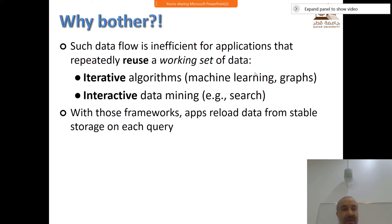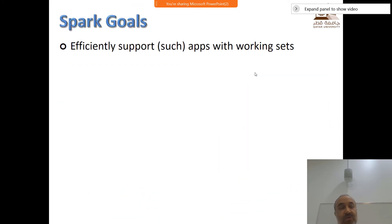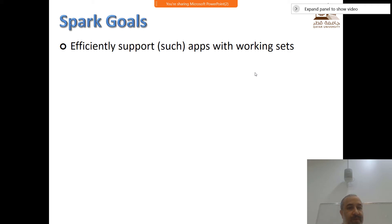That pattern is clear in at least these two types of applications: iterative and interactive. The question is how we can design a framework that can be efficient for these types of applications and also give us the ability to do broader classes of applications than the restrictive programming model that MapReduce provides. Spark is one of the solutions. The main goal of Spark is to efficiently support applications with working sets - if I have a dataset that I am reusing over time, I want to support such applications.